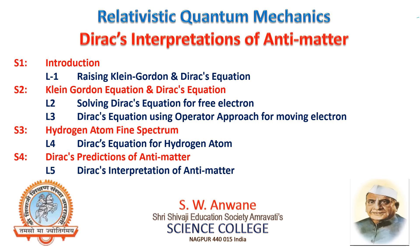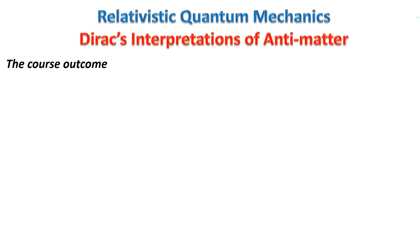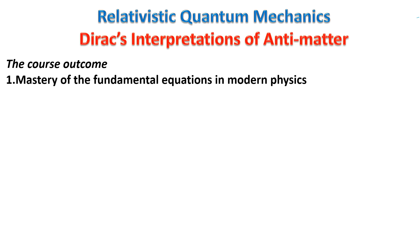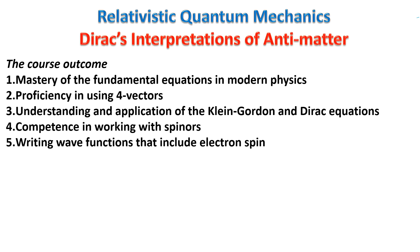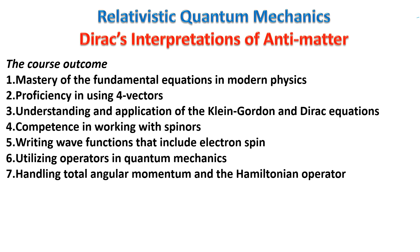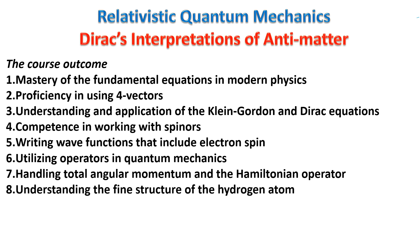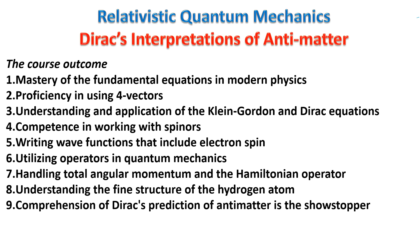In this course, we shall go through 5 lectures and 4 sections as appearing on your screen. What you will be able to develop out of this course includes: mastering the fundamental equations of modern physics, proficiency in using 4-vectors, deriving and applying the Klein-Gordon and Dirac's equations, developing competence in working with spinors, writing wave functions that include the spin of the electron, using quantum mechanics in operator form, handling total angular momentum and the Hamiltonian operator to develop a commutator, understanding the fine structure of the hydrogen atom, and understanding Dirac's prediction of antimatter — which is truly showstopping.